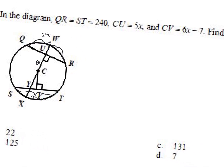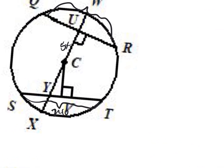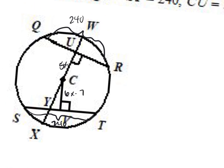The last thing we know: CV is how much? 6x minus 7. What do I do, Sophia? You do 6x minus 7 equals 5x. You are correct. But why? Because you need to find x to plug it back into one of them.